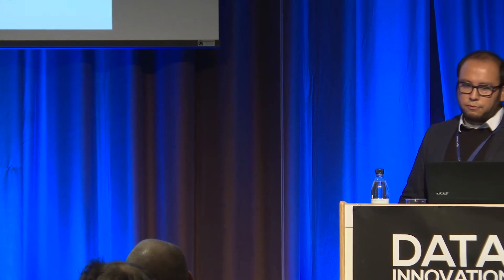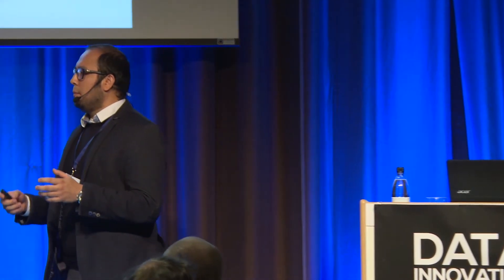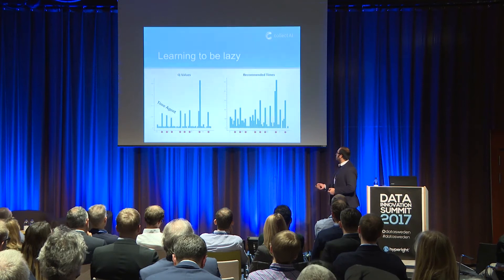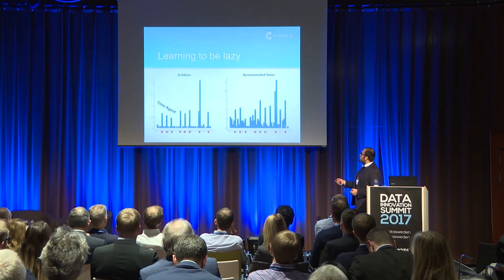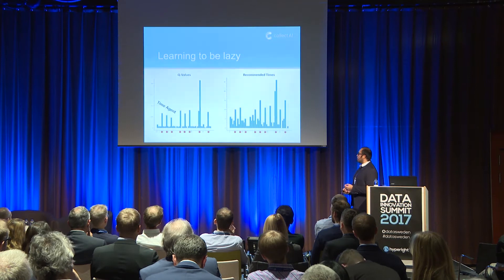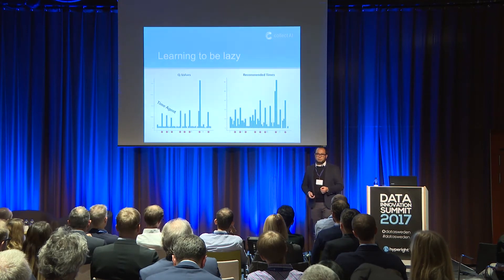What about the principle we just saw? In Collect AI, one of the important parts is learning to communicate with people at specific times that are optimal. We want to minimize the time between sending a message and a person opening it. In this graph, every bar is a time of the day. On the left side, you see how valuable the time agent thinks it is to send a message in a given time bucket, and how often it recommends sending messages in that same bucket. We are learning to really optimize the use of our energy in this respect.